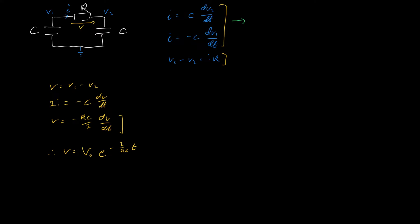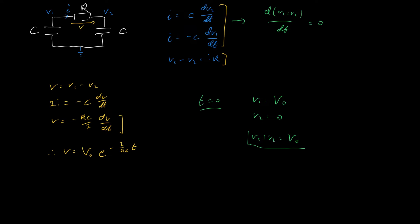Going back to the equations for the two capacitors, we also see that d(V1 plus V2)/dt equals zero. If at time t equals zero we have V1 equals V0 and V2 equals zero, then V1 plus V2 equals V0, and this must be true not only at t equals zero but for all time t.